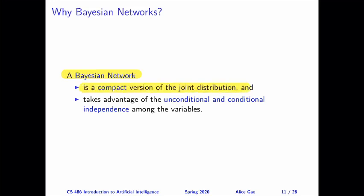a Bayesian network is a compact representation of the joint distribution. And we are able to derive a compact representation because a Bayesian network takes advantage of the unconditional and conditional independence relationships among the random variables. We've seen a little bit of this when I reviewed the definitions of unconditional and conditional independence.